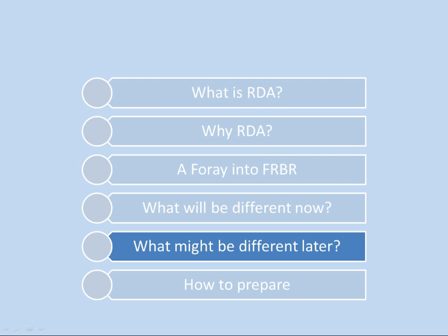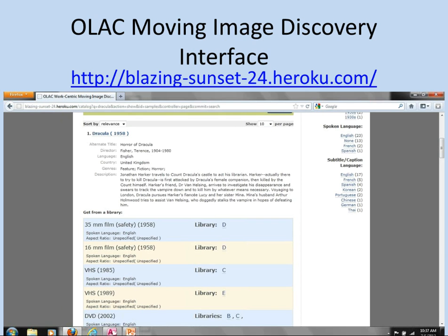If you'll indulge me getting a little more conceptual and abstract again, I want to talk about what might be different later. One thing I always like to talk about is so-called 'FRBRized' catalogs, where you can really see the difference between how we search things now and how we might search things in the future.